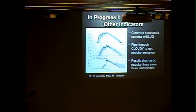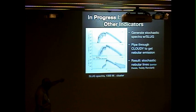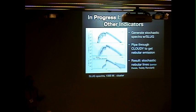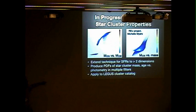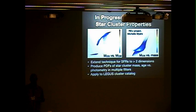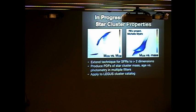We've come up with a better version of SLUG that does fully stochastic spectra, so you can now do this for other indicators like O3 by piping data through Cloudy. We're also working on a similar Bayesian tool to infer the properties of individual star clusters. I'll end there since I see the chairman standing up.